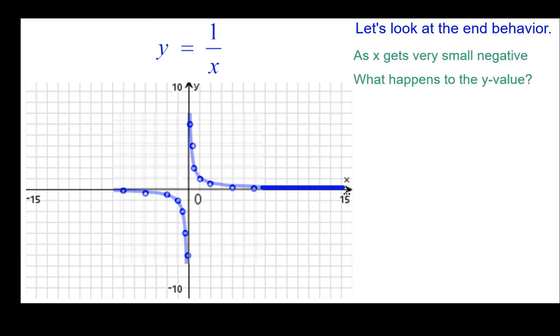Looking at the other end, as x gets very, very small negatively, that's way over here, this direction, what happens to the y value?